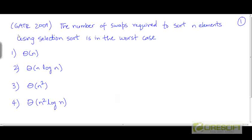This is a question from the GATE exam year 2009. The number of swaps required to sort n elements using selection sort in the worst case is: theta of n, theta of n log n, theta of n squared, or theta of n squared log n. You need to pick the right choice among these four. You can pause the video at this stage if you want to attempt this problem yourself.